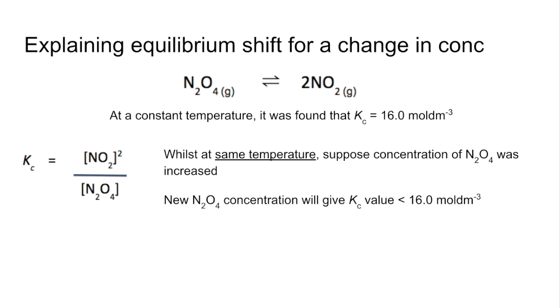Now remember, Kc can't change. It's the same temperature. So the equilibrium needs to shift to bring Kc back to that value of 16. Well, how does it do that? It needs to make the numerator term larger. How does the equilibrium do that? It shifts forwards. So to restore Kc, the NO2 concentration needs to increase. And it does that by shifting right.